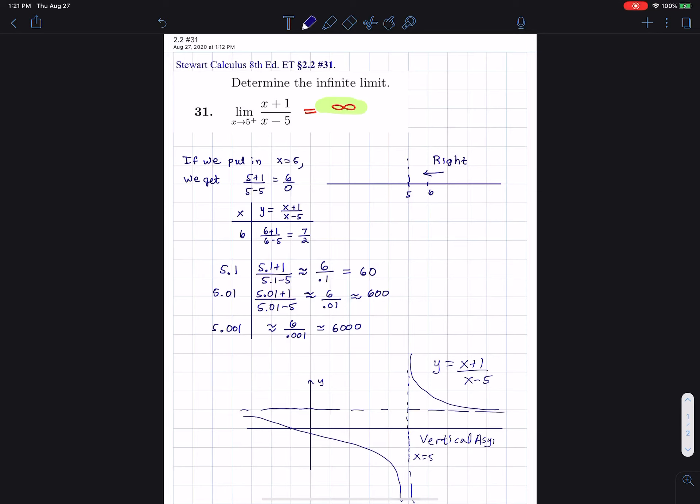And in fact, writing that infinite limit is sort of, in some ways, just restating, it's the rewording of the statement: there's a vertical asymptote, x equals 5. It's the same thing as this right here. But here, I just have the right-hand side.